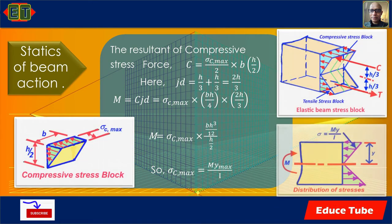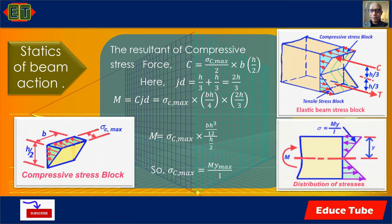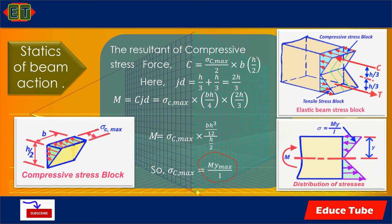The conventional elastic beam theory results in the equation sigma equals M·y divided by I. This equation is for an uncracked homogeneous rectangular beam without reinforcement. Here we can see the distribution of stresses, and the resultant compressive stress force C can be written from the compressive stress block.